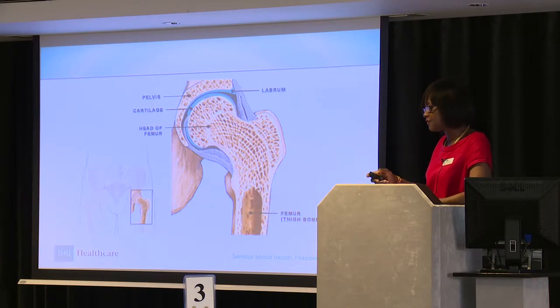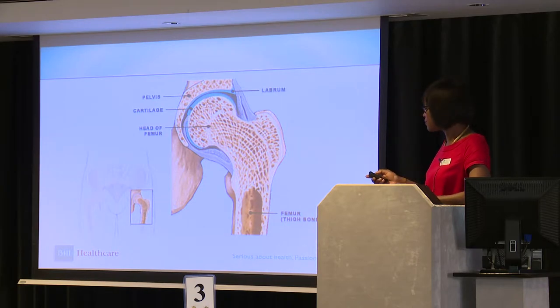Those bursae can be inflamed. Bursae are located at bony prominences all over the body, but around the hip they're particularly around the greater trochanter and the lesser trochanter. At the greater trochanter you've got the gluteus maximus, medius, and minimus, and in between each of those tendons is a bursa. There is not a single bursa — there are several bursae. That's important to know because when you're giving injections to the bursa, if the patient hasn't responded, it may mean you haven't got into the right one.